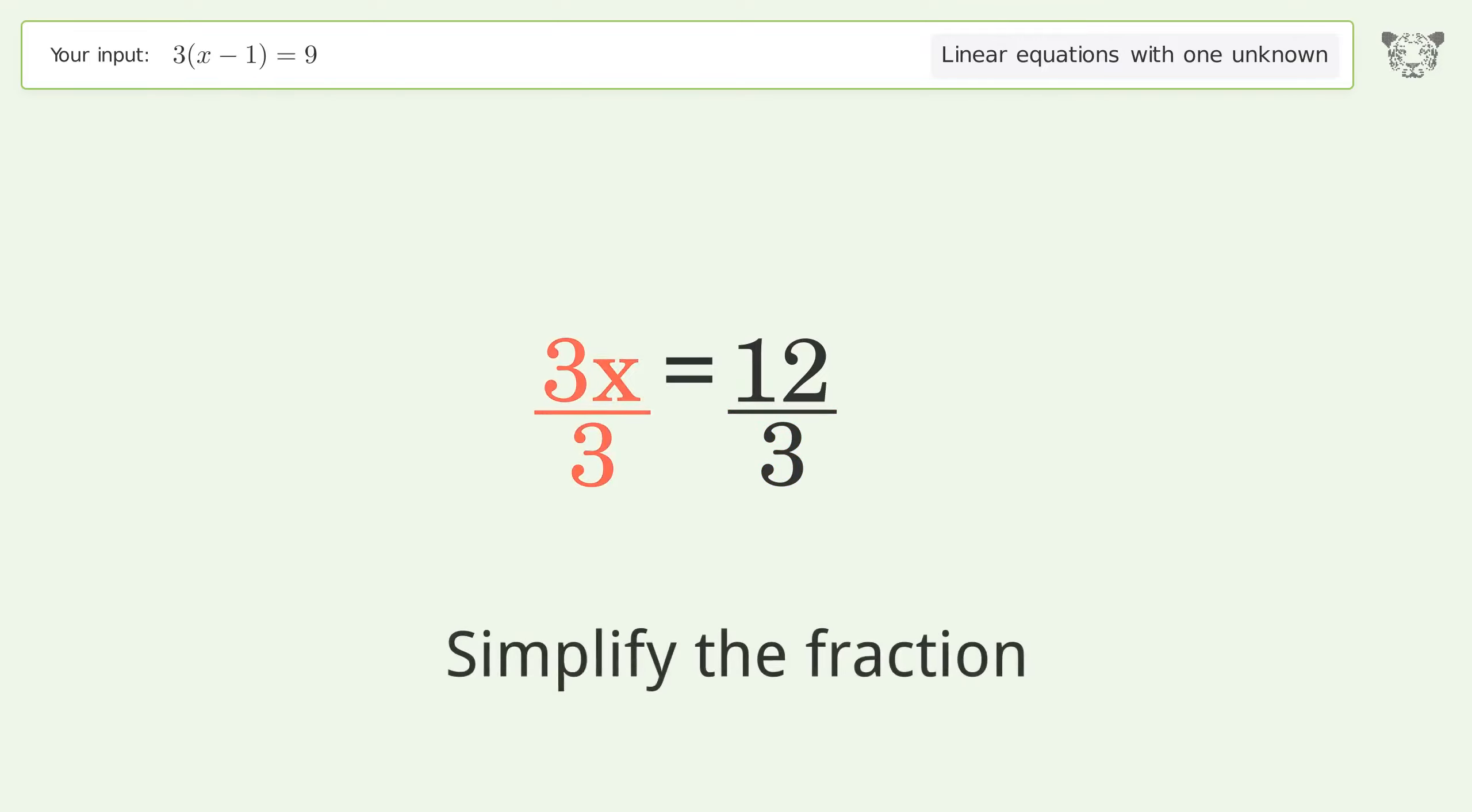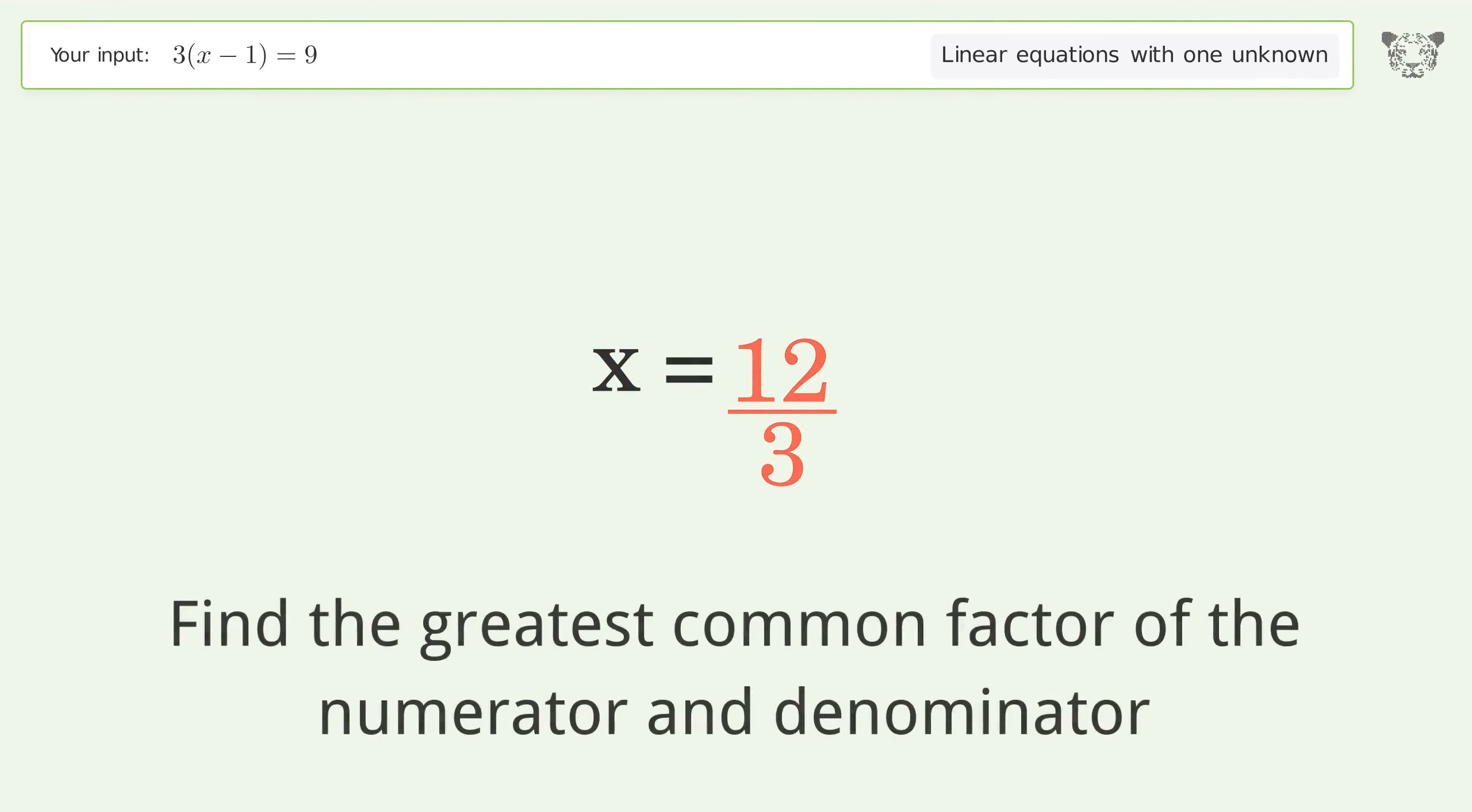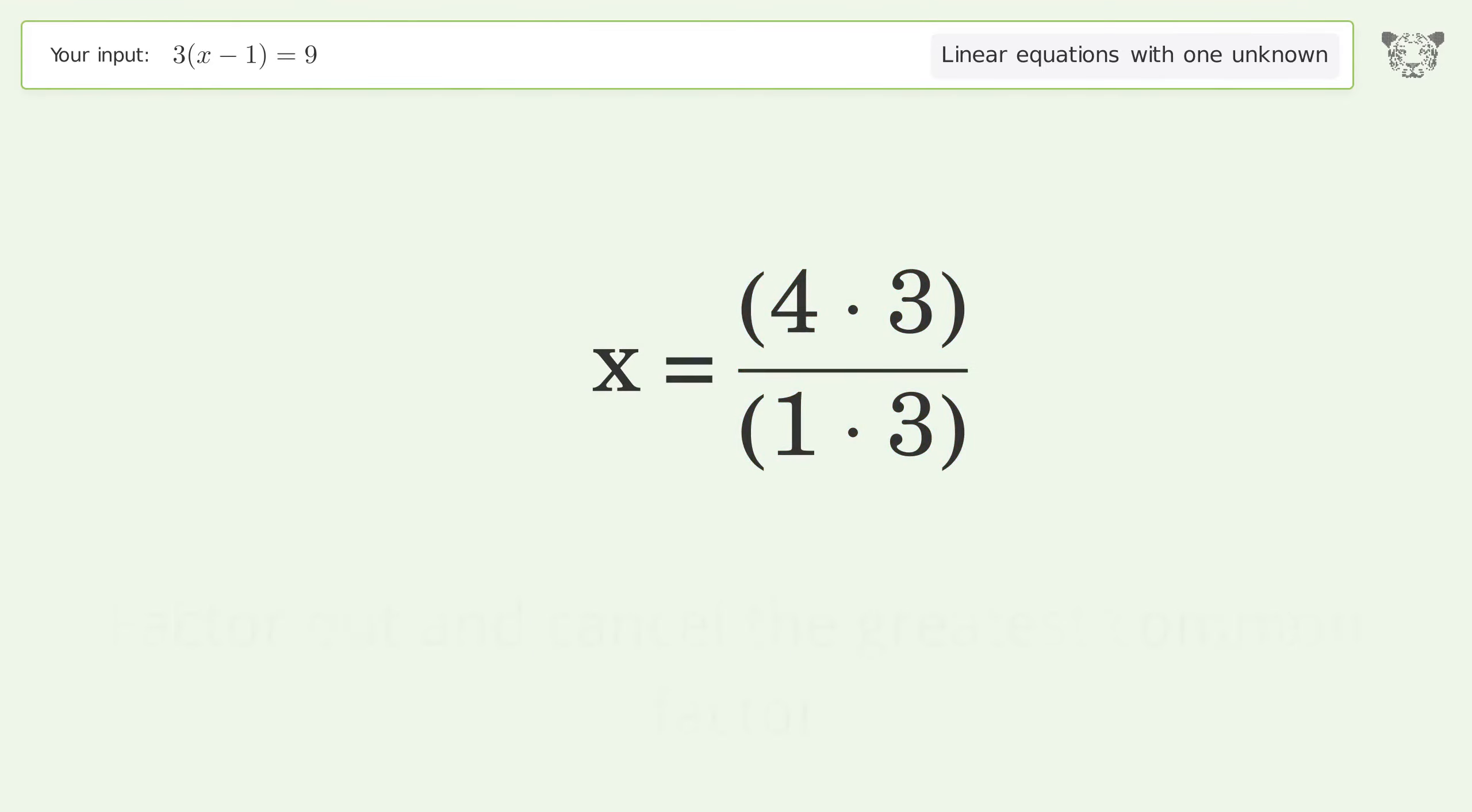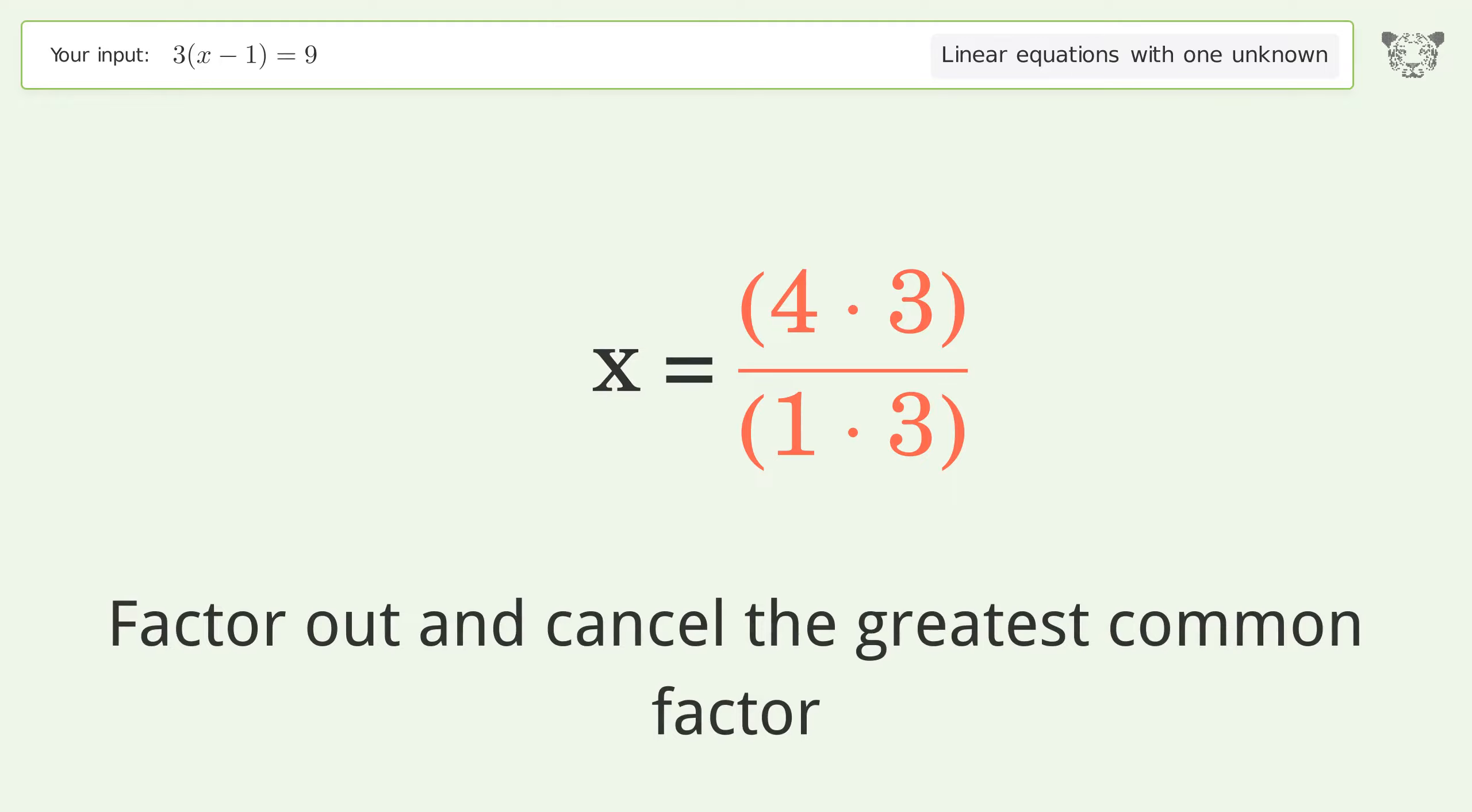Simplify the fraction. Find the greatest common factor of the numerator and denominator. Factor out and cancel the greatest common factor.